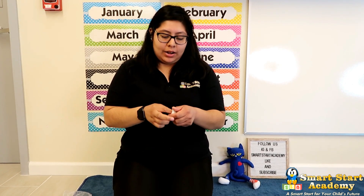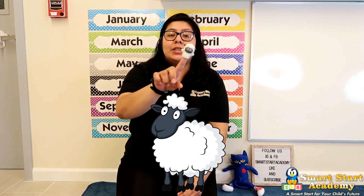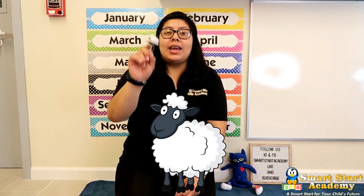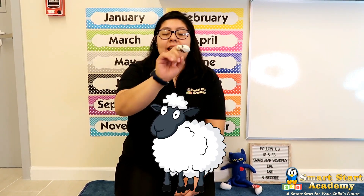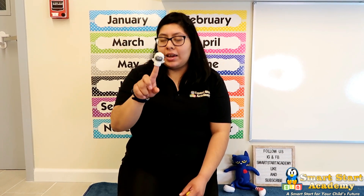And on that farm he had a sheep. It's a little sheep. E-I-E-I-O. With a baa baa here and a baa baa there. Here a baa, there a baa, everywhere a baa baa. Old MacDonald had a farm. E-I-E-I-E-I-O.